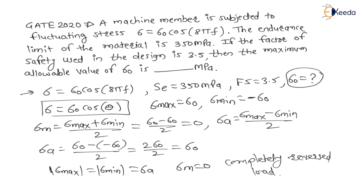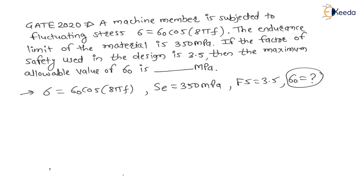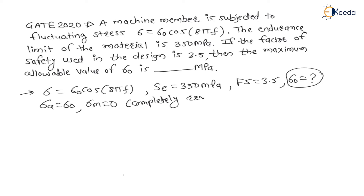For this loading we need to design using the given factor of safety. Stress amplitude is sigma_naught and mean stress is 0. Whenever mean stress is 0, it is called completely reversed load, and you can use any criteria — Soderberg, Goodman, modified Goodman, or Gerber — as all criteria give the same result when sigma_m equals 0.